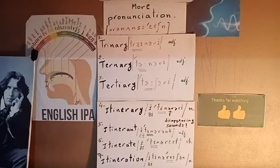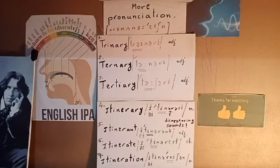The last word is itineration. Itineration is a five-syllable noun, and the penultimate syllable 'R' should be stressed. We say itineration, meaning traveling from place to place.